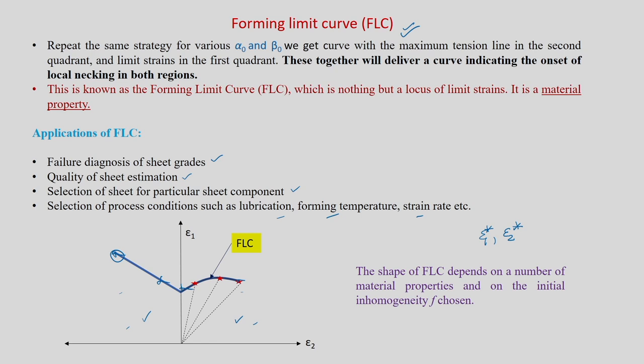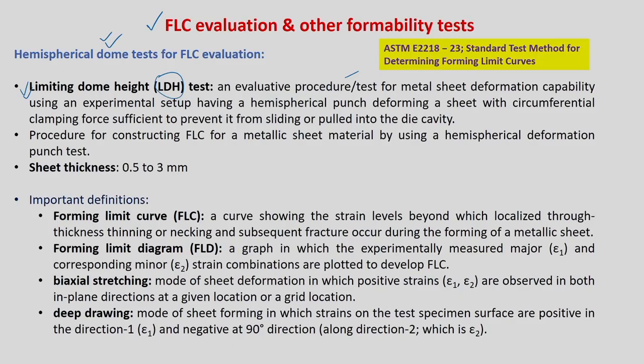Like this you change the strain path — predefined strain paths, predefined betas. You can imagine why it is predefined, because alpha naught and beta naught are set initially. During the course of deformation, during necking, it can change, but the strain path is predefined and you get limit strains at other betas. By changing the strain path, the procedure is very simple and can be told in one sentence.